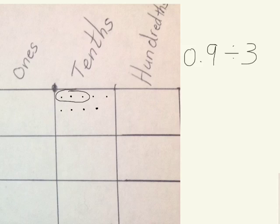I have 3 and I have 3 and I have 3. 9 tenths divided by 3 equals 3 tenths. There are 3 tenths that make up the 9 tenths. Three sets of 3 tenths make up 9 tenths.